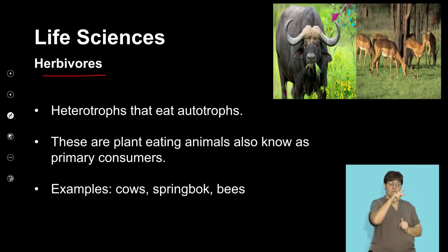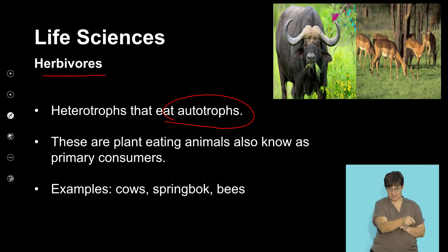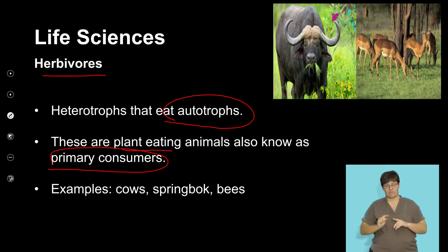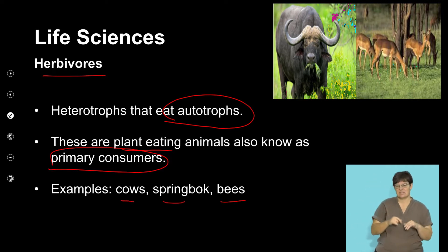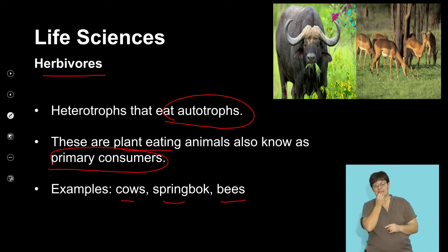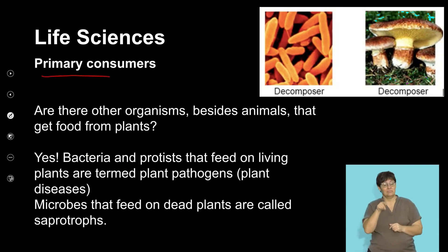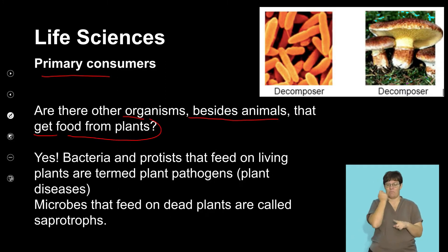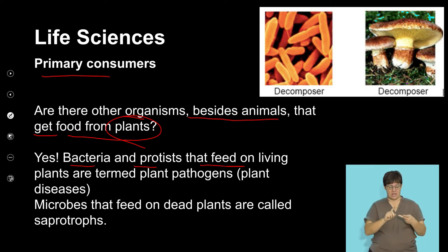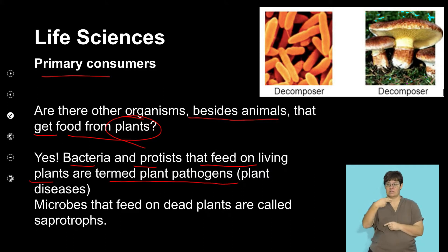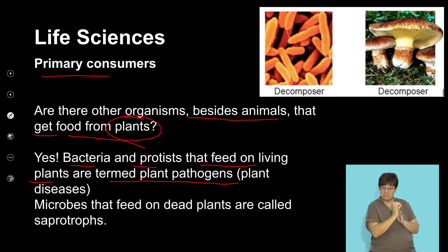Cows, springbucks, bees, and cattle are a large group of herbivores. There are other organisms besides animals that get their food from plants. Bacteria and protists feed on living plants and are termed plant pathogens. We know that certain bacteria feed on plants, and certain fungi feed on plants, causing disease. We will look at the term parasites in a bit.